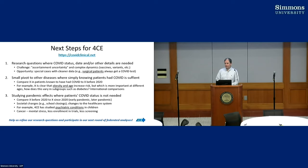The third category involves questions that have nothing to do with COVID directly, but concern societal changes that occurred during the pandemic and how hospitals changed in treating patients. For example, we can compare how a disease was treated before 2020 to how it's treated today. We have a working group studying psychiatric conditions in children — looking at factors like school closings that affected children's health regardless of their COVID status. Cancer is another good example: mental stress, less enrollment in trials, and less screening have all influenced cancer outcomes that we're interested in studying.